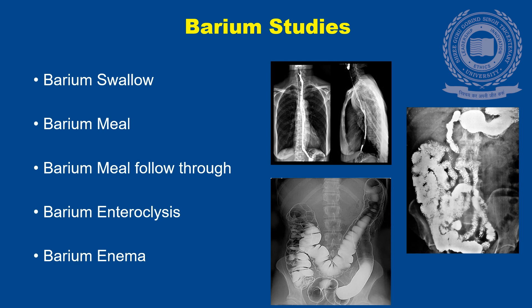There are various barium studies. Barium Swallow involves delineation from the oral cavity till the gastroesophageal junction. Barium Meal examination is used to study the lower esophagus, stomach, and the duodenum. Barium Meal Follow-through is done for delineation of all parts of the small bowel till the ileocecal region. Barium Enteroclysis is a gastrointestinal technique designed to provide improved evaluation of the small bowel. Barium Enema is a method of imaging the entire colon after barium is given per rectally.